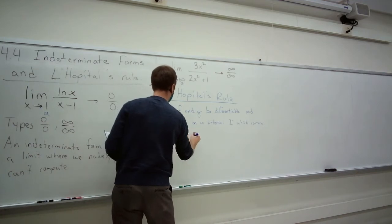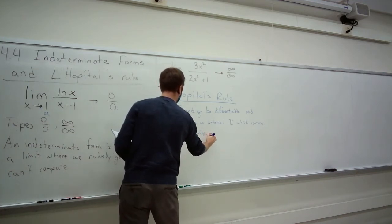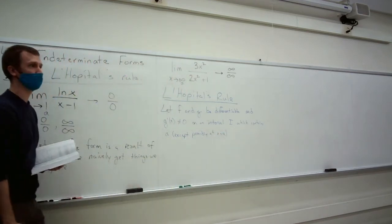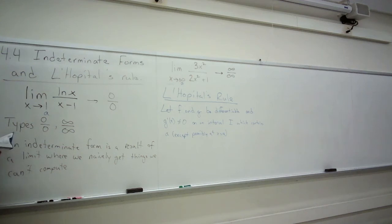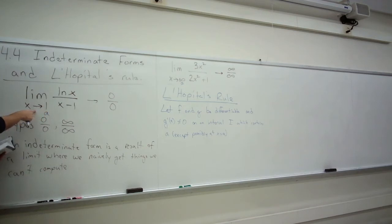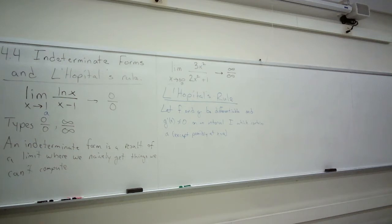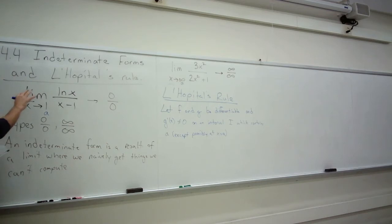In classic limit fashion, we don't really care what happens exactly at a — limits only care about the approach, not what actually happens there. We had all sorts of strange things where a function can come up to a certain height, say 10, so the limit of the function as x goes to a is 10, even if the actual function value is defined as 20 at a. The limit is 10 even though the actual function value is way up here — limits care about when you get close, not the actual value.